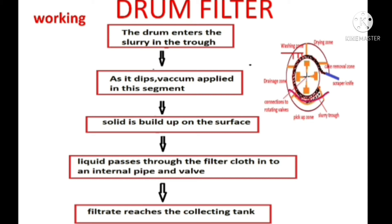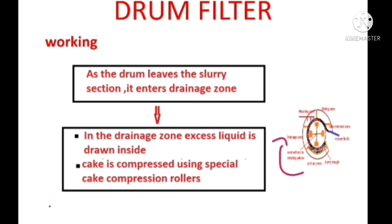The drum leaves the pick-up zone and enters the drainage zone. In the drainage zone, special cake compression rollers are present. With the help of these cake compression rollers, the solid cake is compressed and more and more water is removed. Through the filter cloth, filtration continues — the liquid from the solid cake is removed through the internal pipe into the collecting tank. In the drainage zone, excess water is removed with the help of the cake compression rollers.